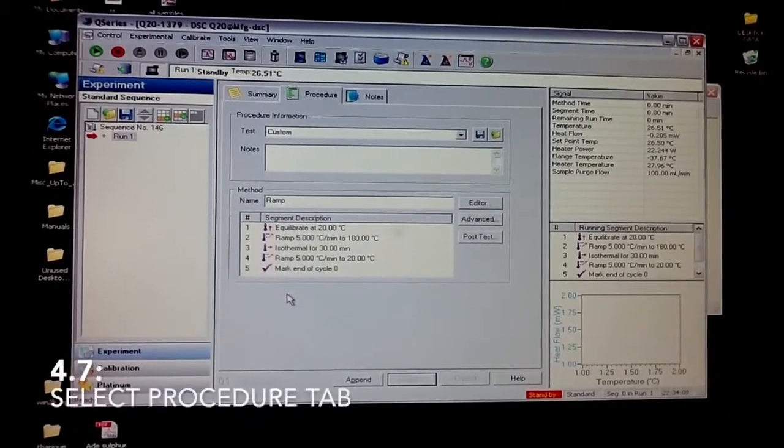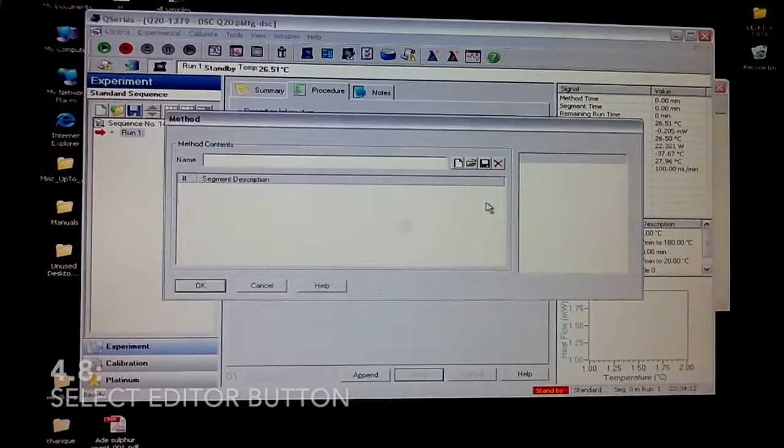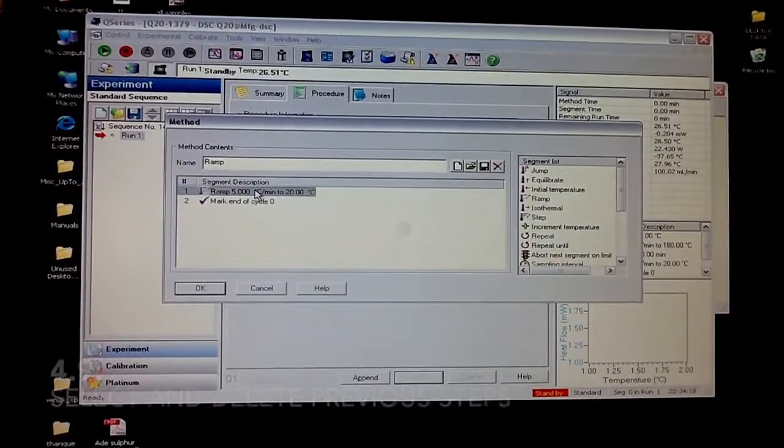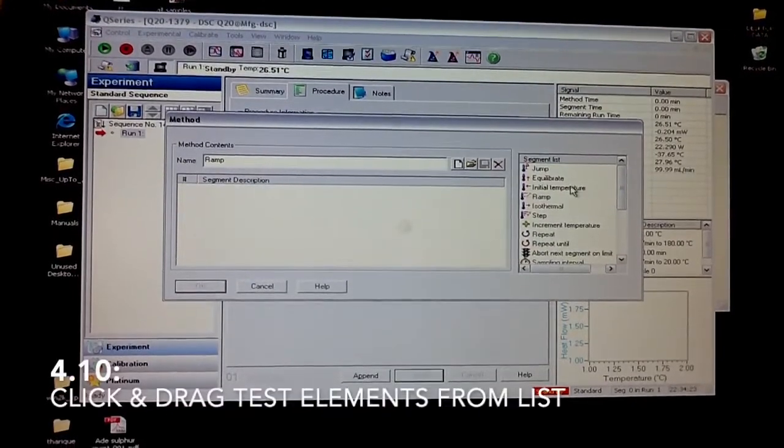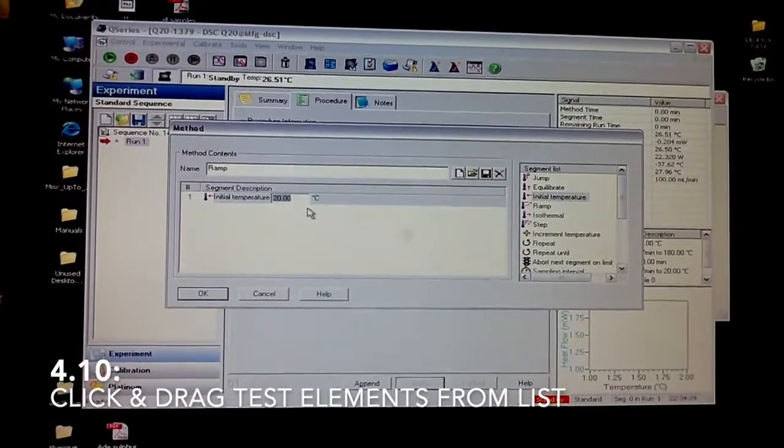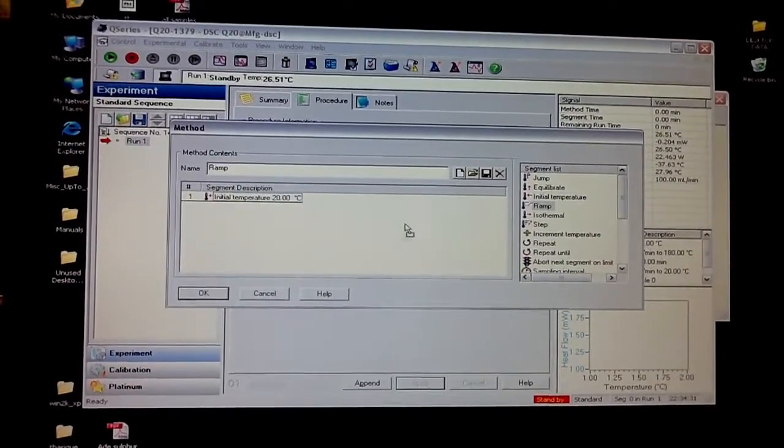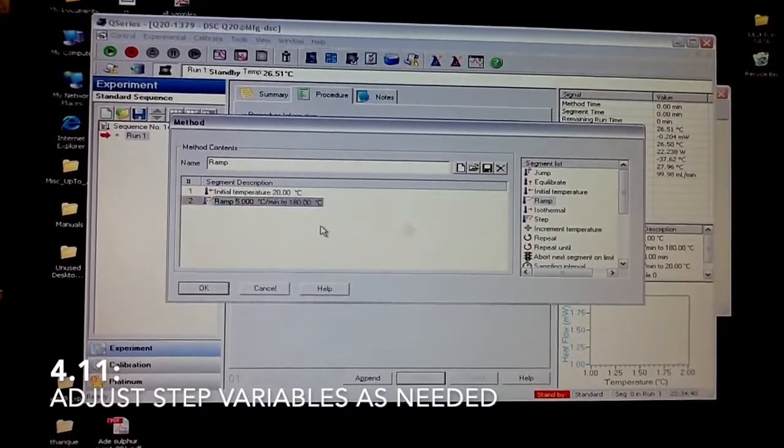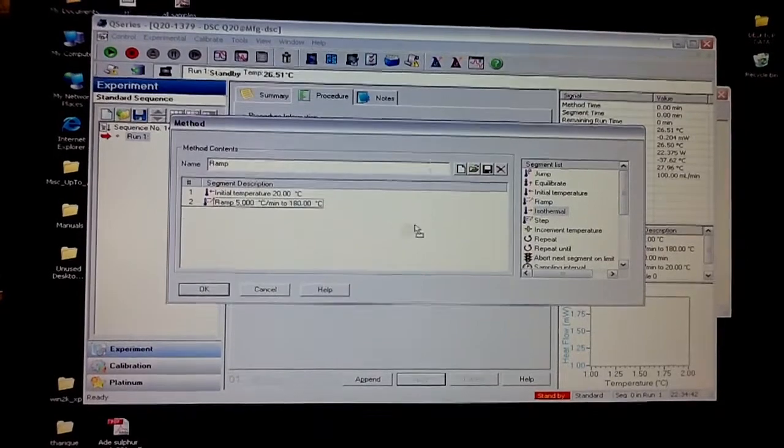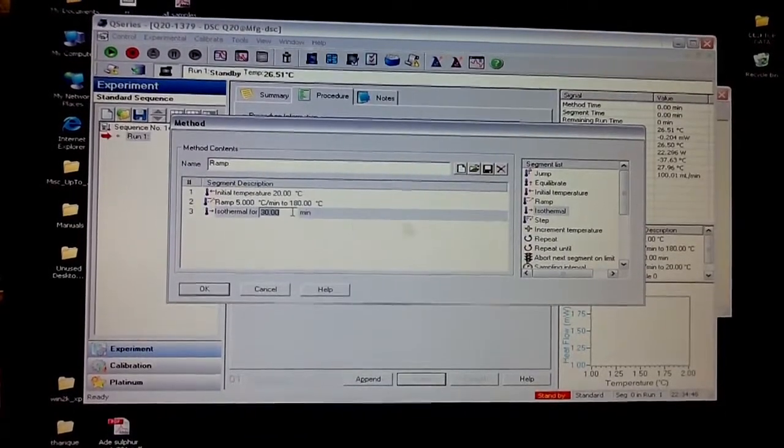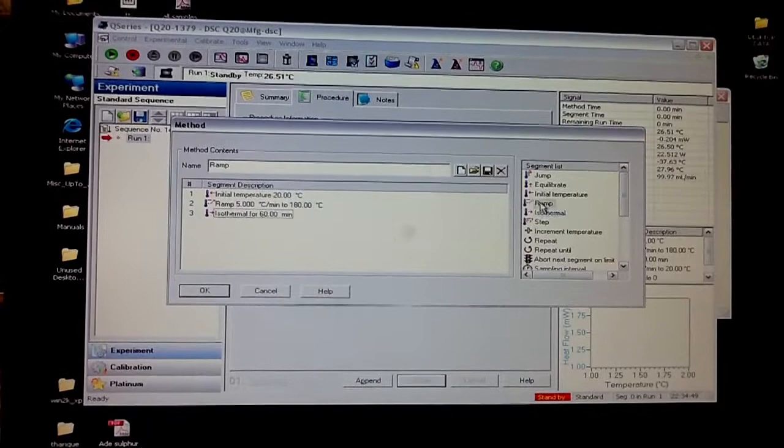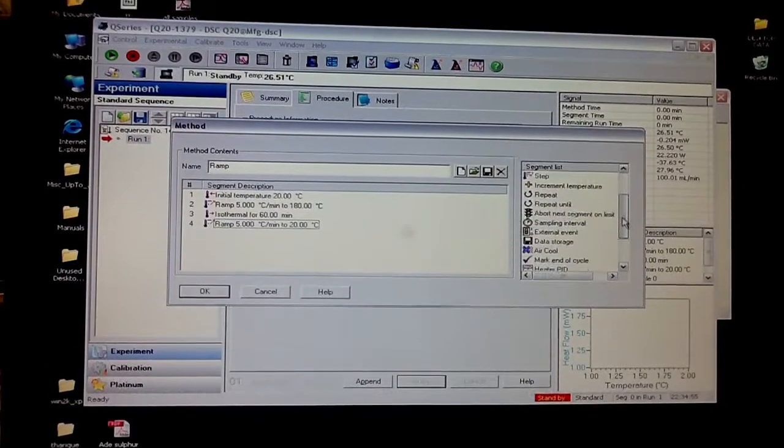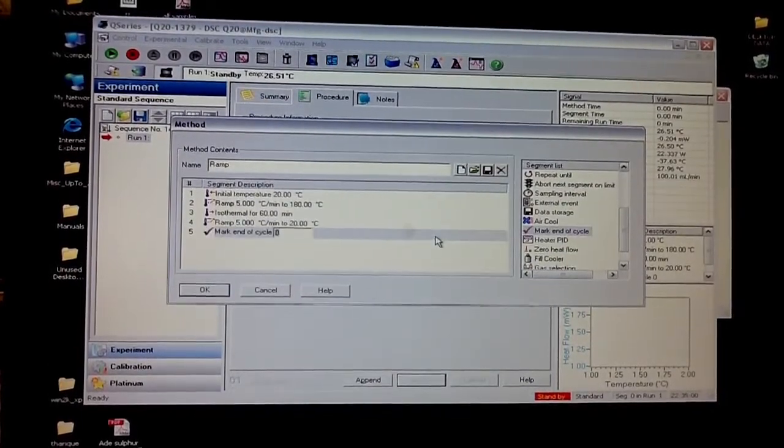In the Procedure tab, you can set your test up by hitting this Editor button. You highlight it and hit Delete to take away a previous test. Usually a test will initialize a temperature. Then you'll put in a ramp at about 5 or 10 degrees C up to your target temperature. You'll put in an isothermal step to hold for however long. Then you will put in a ramp to take it back down to 20 C. And then you end this cycle here.